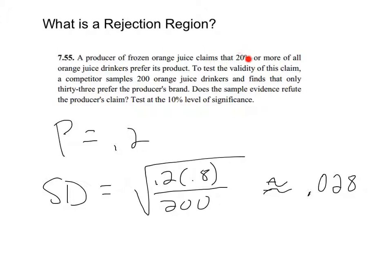We've got this producer that claims that 20% or more of the market share. And so then a competitor went out and did a sample of 200 OJ drinkers and found that 33 of them preferred the brand. So does the sample refute the producer's claim?